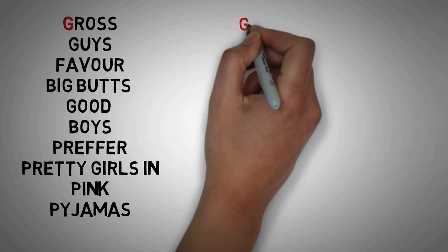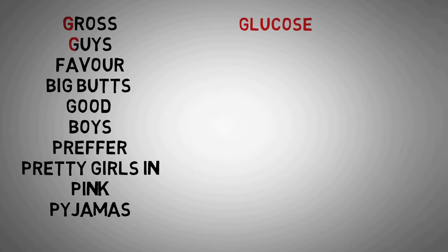This mnemonic is based on the following substances. The G in gross stands for glucose, which is the first molecule used in glycolysis. Again, we have one more G that stands for glucose 6-phosphate, which is the next molecule in this pathway. The F in the word favor stands for fructose 6-phosphate.